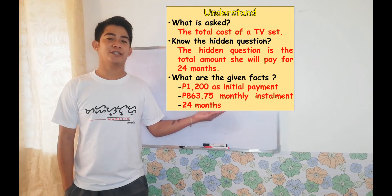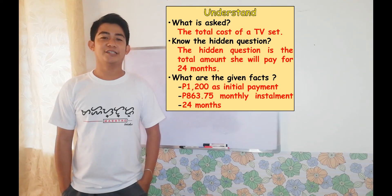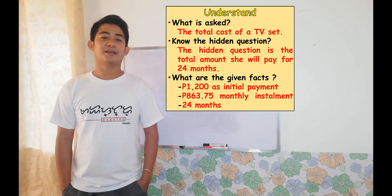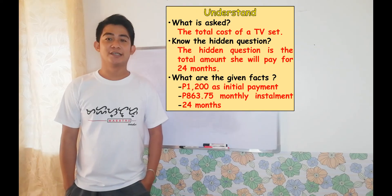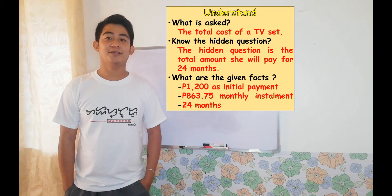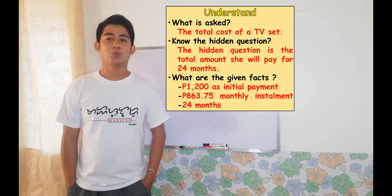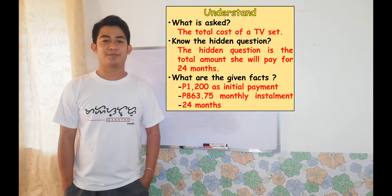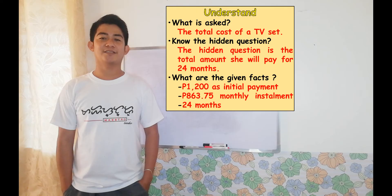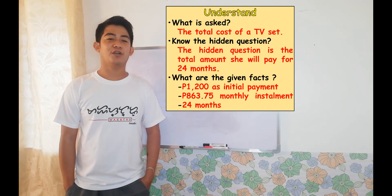The second part of Understand is to know the hidden question. Sometimes, in our word problems, there are hidden questions that we need to answer first before we can solve the problem. In this particular word problem, the hidden question is the total amount of monthly money that Lael will pay for 24 months. The third part of Understand is to identify the given facts: 1,200 pesos as initial payment, and 863 pesos and 75 centavos as monthly installment for 24 months.